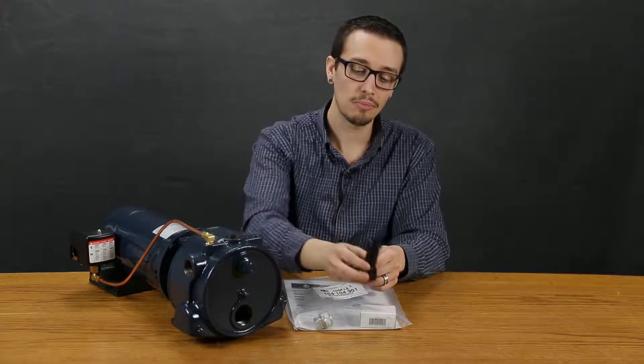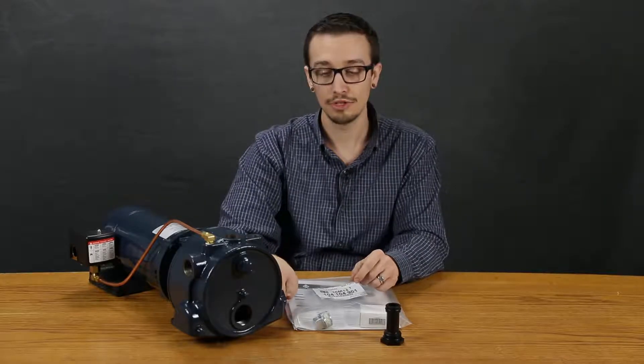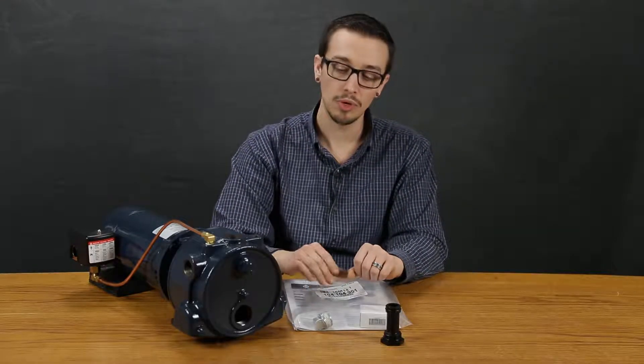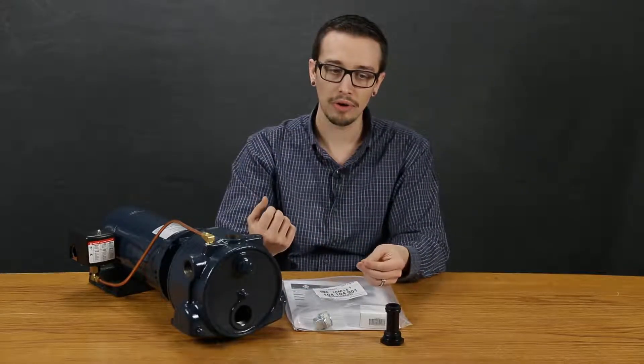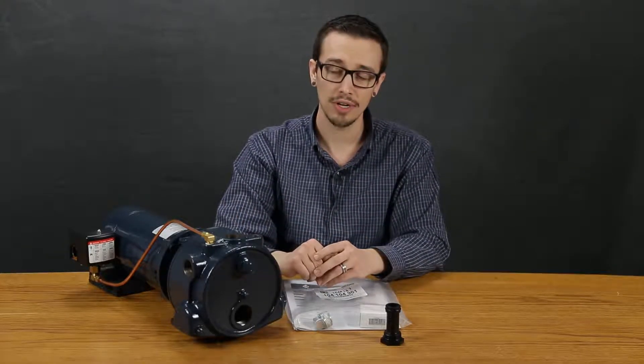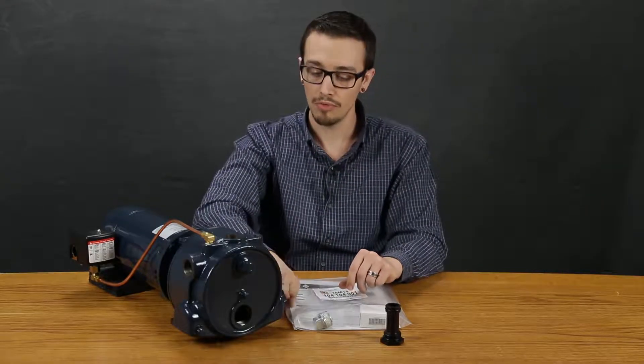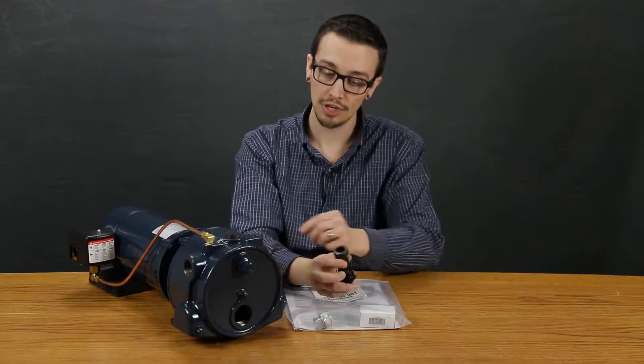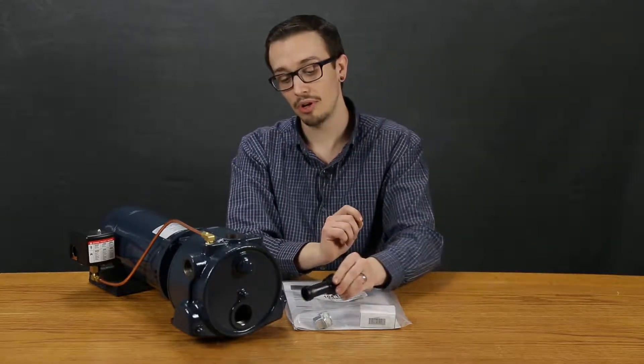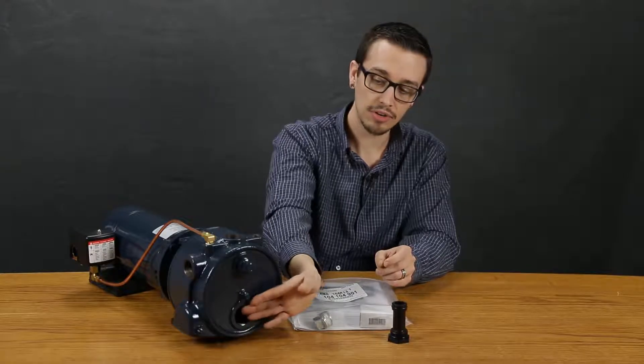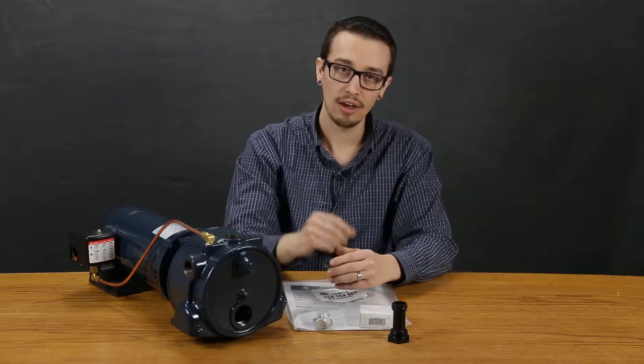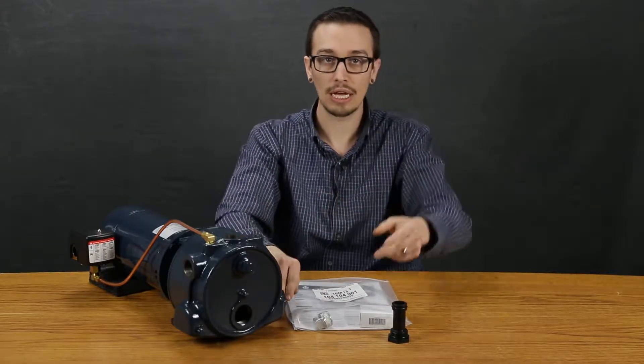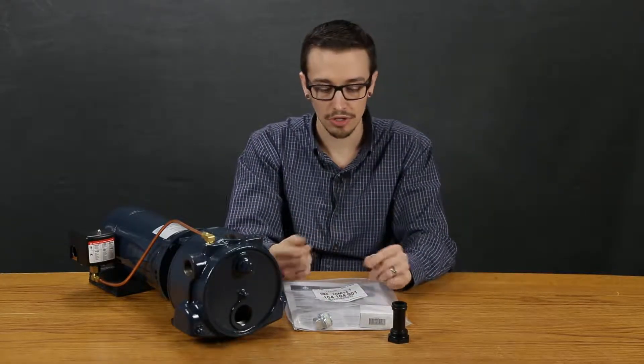This replaces the shallow well jet that's in the side of the pump here for deep well installations. If you have a deep well where your suction lift is greater than 25 feet you would remove the shallow well injector, put the bypass plug in, and then on the end of your suction line you would have a deep well injector. It just moves the injector down closer to where the suction is taking place.